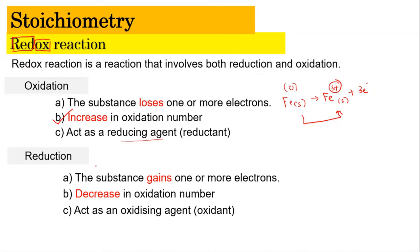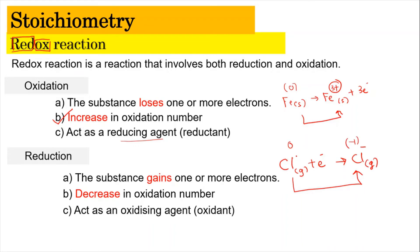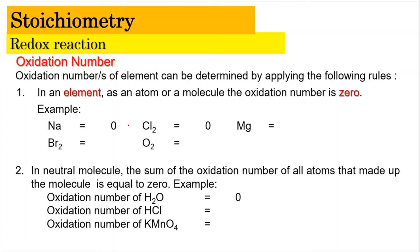Similarly, for reduction — for example, chlorine gas (Cl) receives one electron to become Cl⁻(g). As a result of gaining an electron, there is a decrease in oxidation number from zero to negative one — from no charge to negative charge. Because it undergoes reduction, it acts as an oxidizing agent. For redox reactions, one of the most important things is to determine the oxidation number, which can be done by applying various rules.